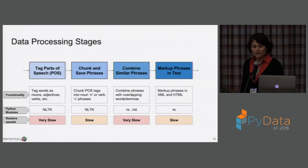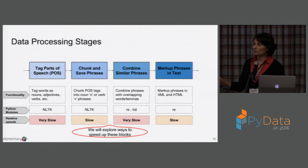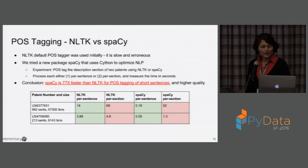We started out with NLTK for the first two stages — very slow. Part-of-speech tagging is pretty slow. Chunking is actually okay. Combining was something we had a very naive, O(n²) implementation for. And then we mark them up in text, which is somewhat slow but not too bad. What we'll look at now is those four stages and what we did to bring the performance back.